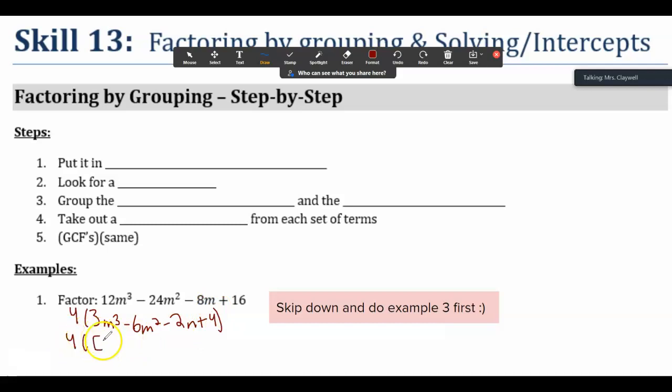These all have a 4, so I'm going to factor out a 4. Then I'm going to group my first two terms, then my second two terms. Pull out a greatest common factor from the first one. They both have a 3m squared, so I end up with m minus 2. The second one, I'm going to pull out a negative 2, m minus 2. So if we look at this, I got my matching. I'm going to pull out my matching, and then I have my leftovers. And I can't forget my 4 in the front.